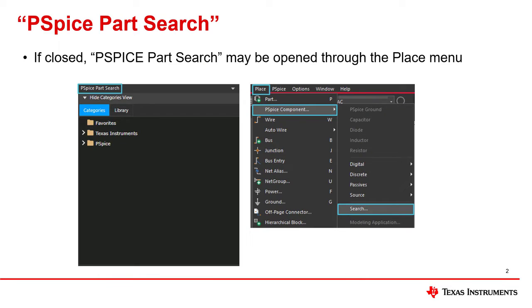The PSPICE parts search window is, by default, located on the right-hand side of the screen. If this is closed, it may be opened again through the Place menu under PSPICE Component Search.